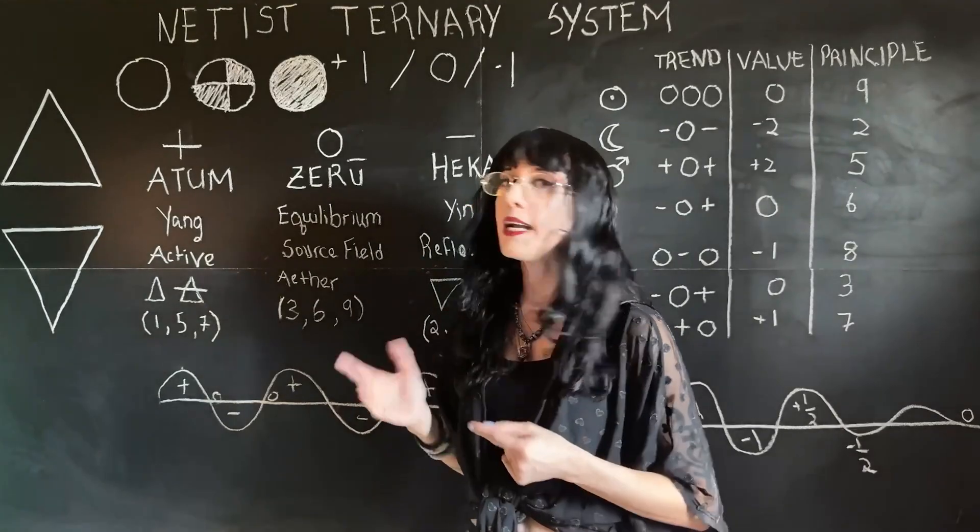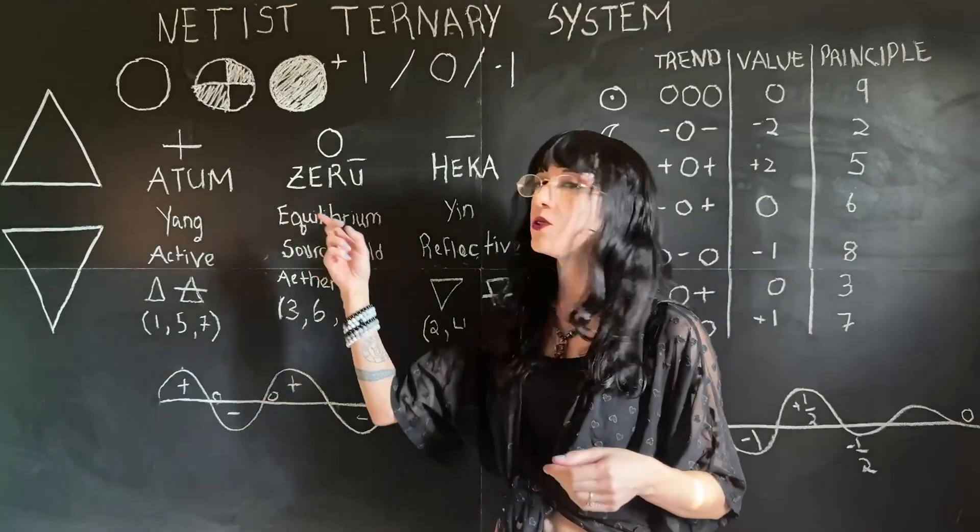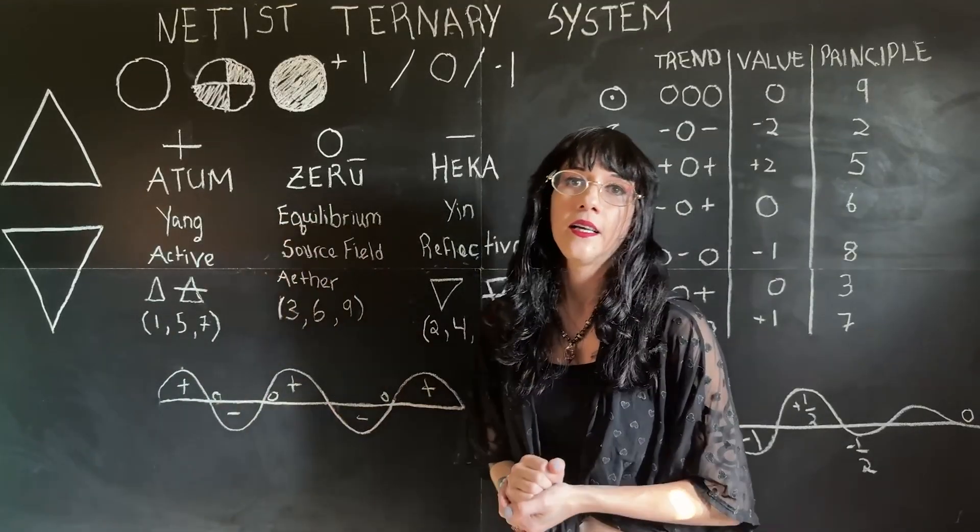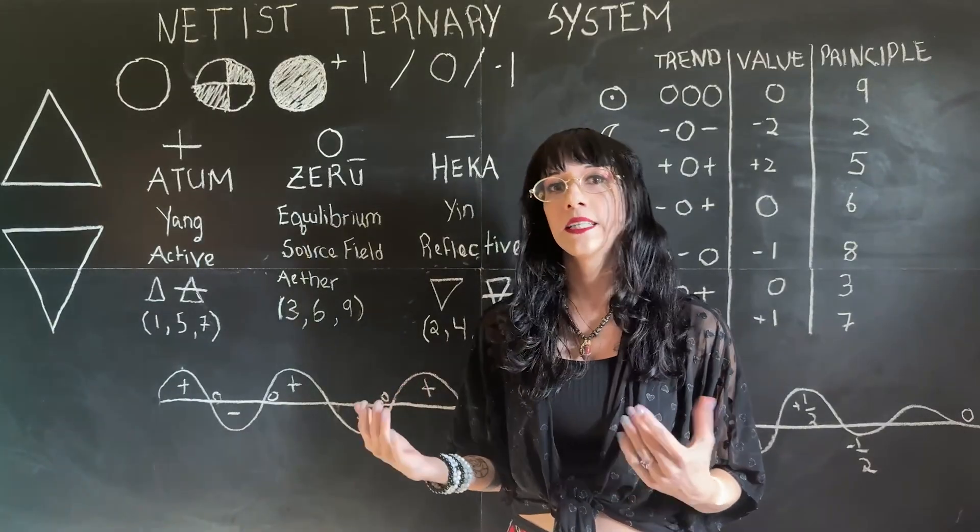So the netism system uses the names Atum, Zero, and Heka. And I will explain this to you. It's the plus, the minus, and the hold.